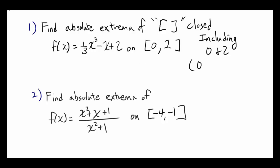In this case we are including 0 and 2. If there is an absolute extrema at 0 or at 2, we are going to count those. Now, to find absolute extrema, there are some steps you have to follow.